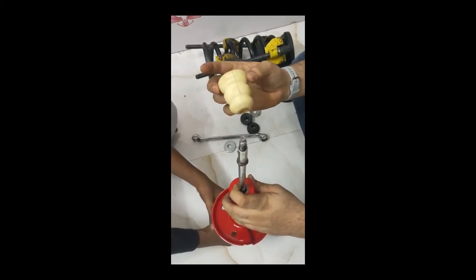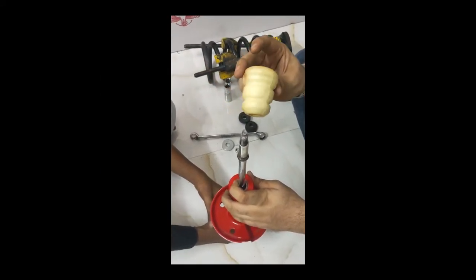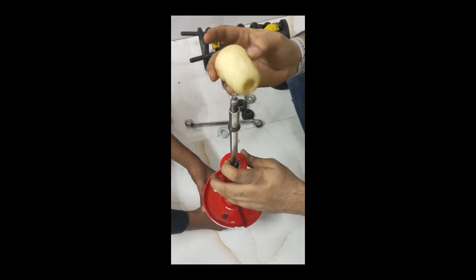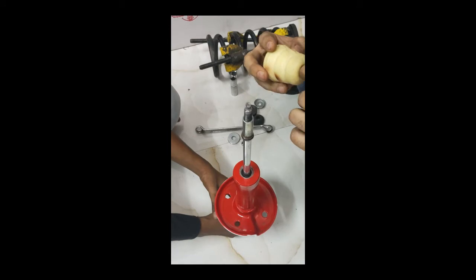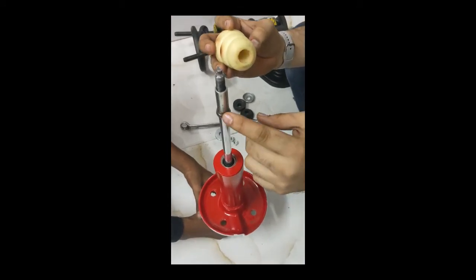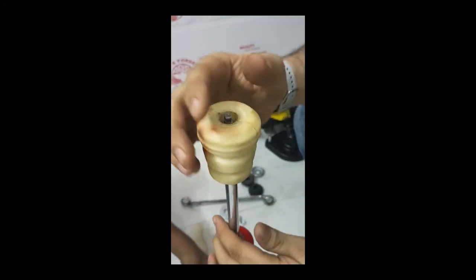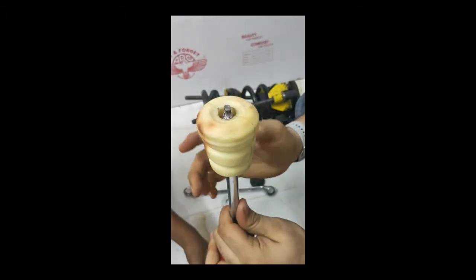First of all, we need to fit this buffer onto this shock absorber. While fitting, you have to put some grease on this inner surface and also on this part, so that it glides onto the shaft.